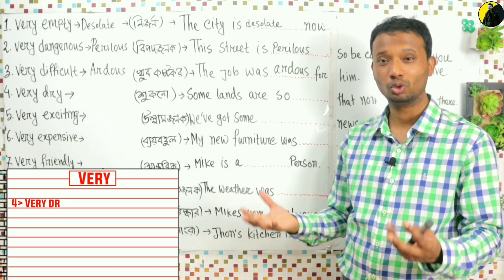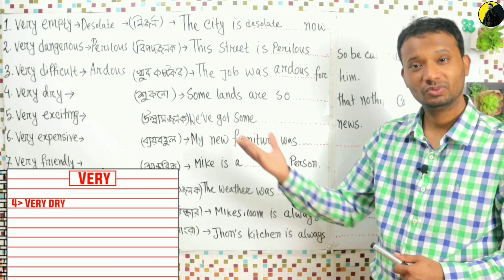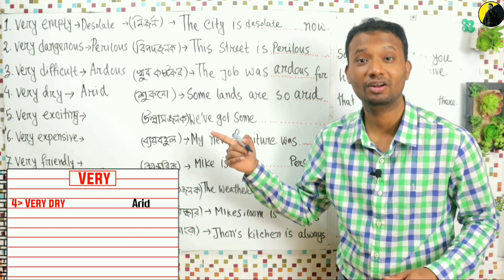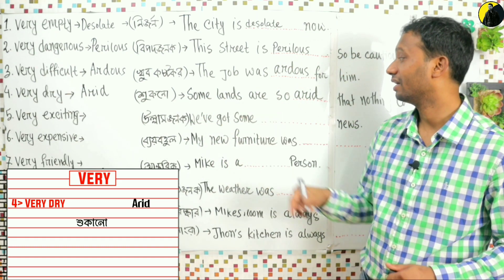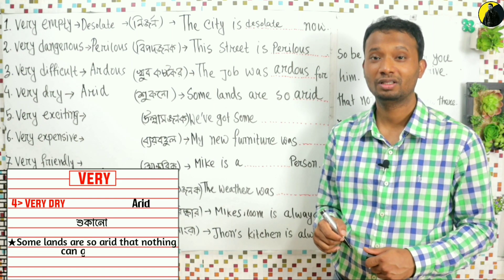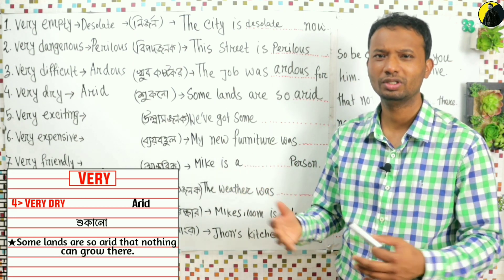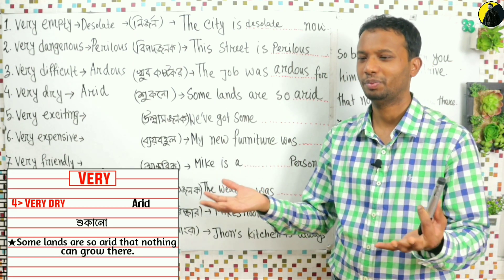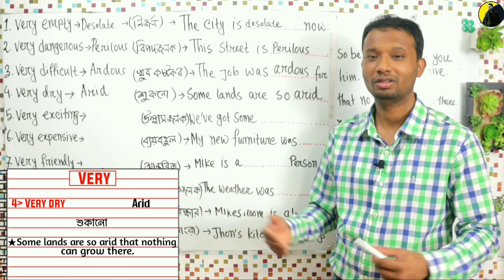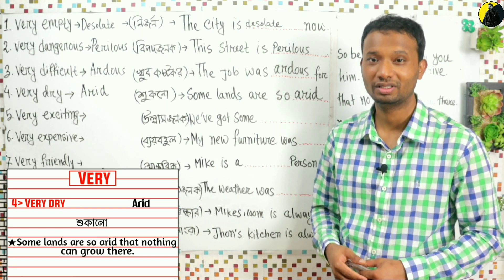Very dry. The advanced synonym for 'very dry' is: arid. Repeat: arid. A-R-I-D. For example: 'Some lands nowadays are so arid that nothing can grow there.' Because there is no rain. Deserts are so arid that nothing can grow there.